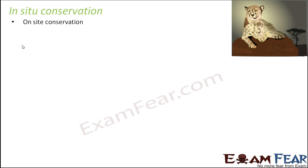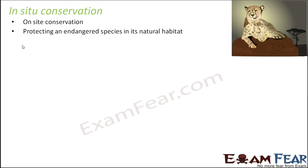In-situ conservation is on-site conservation — the natural habitat of the organism. It means protecting an endangered species in its natural habitat. Endangered species are species which are facing the danger of becoming extinct; they still exist but their population has reduced quite a bit. We should take special care of endangered species to prevent them from extinction, and when we protect them in their natural habitat, that is called in-situ conservation.